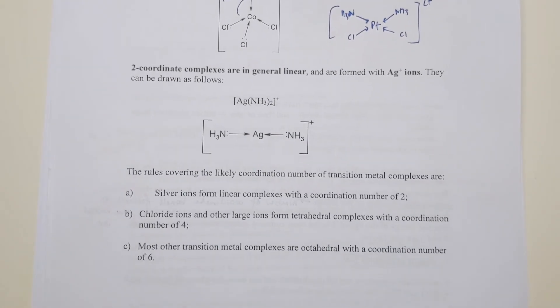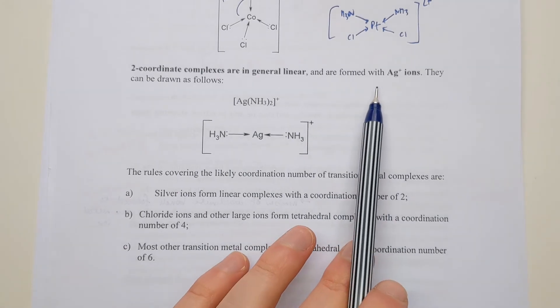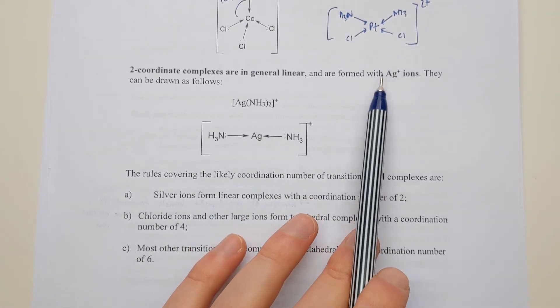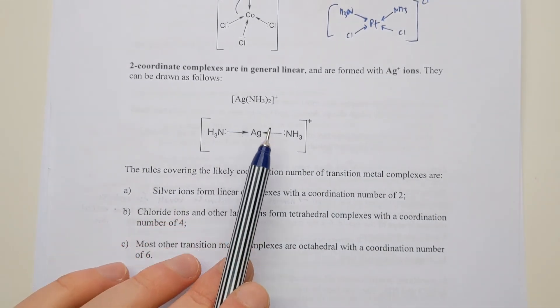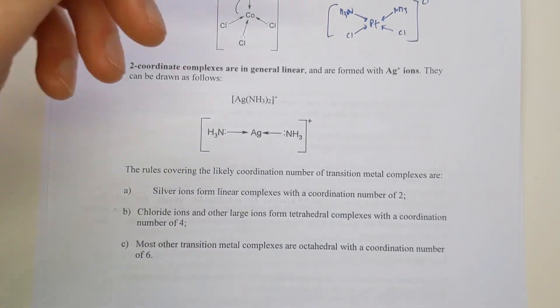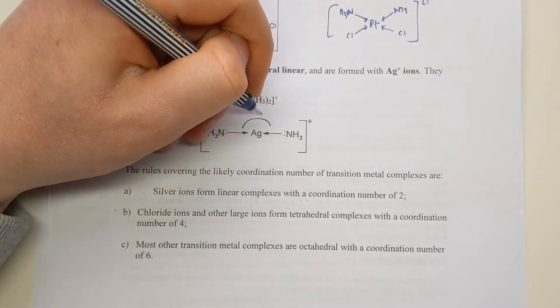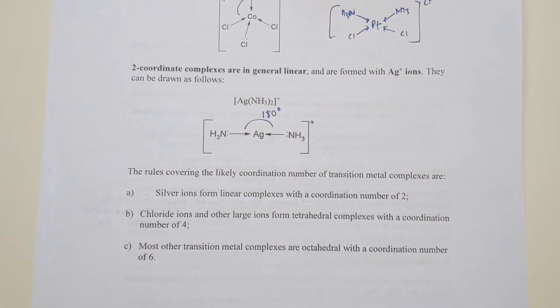With some ions, you only actually get two coordinate bonds formed. This only really comes across in one particular element, and that's with silver ions. Silver generally only supports two bonds formed to itself. So if we've got this complex with silver and two ammonia molecules, they'd be formed in a straight line. It's a linear configuration with 180 degrees between each of the bonds.